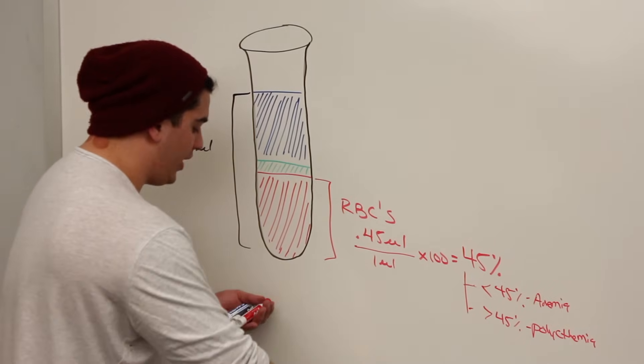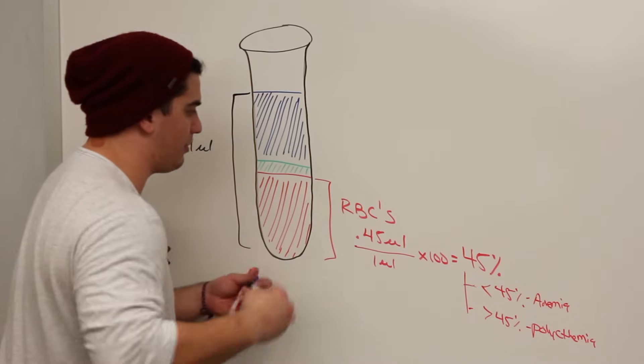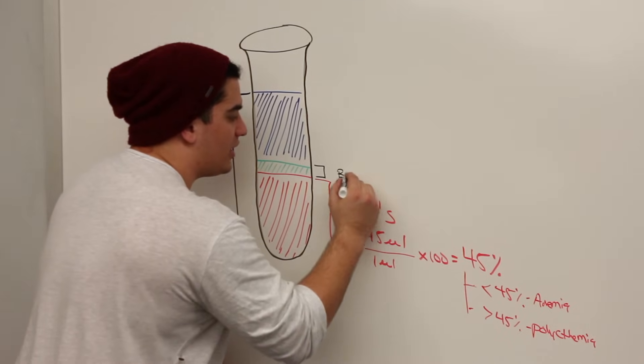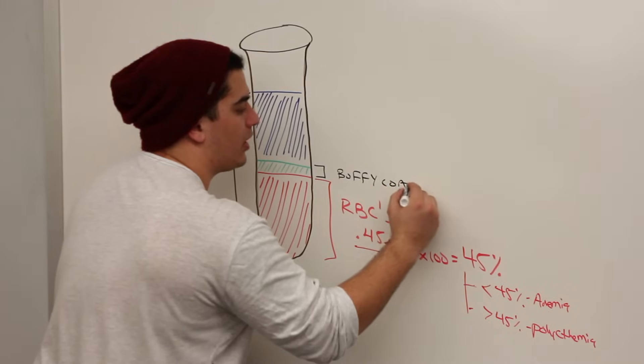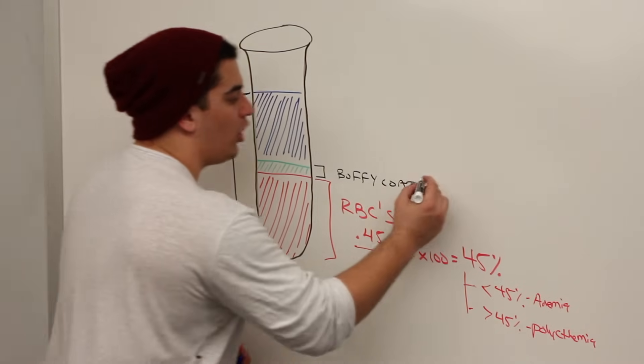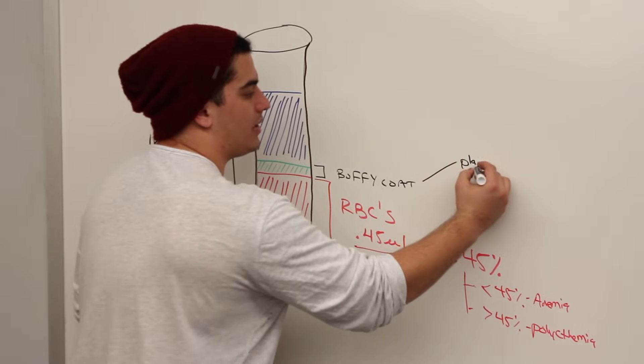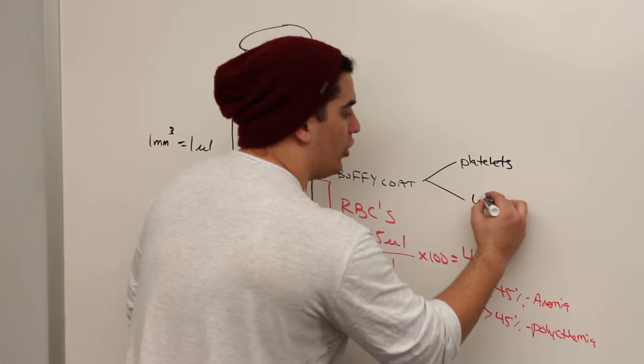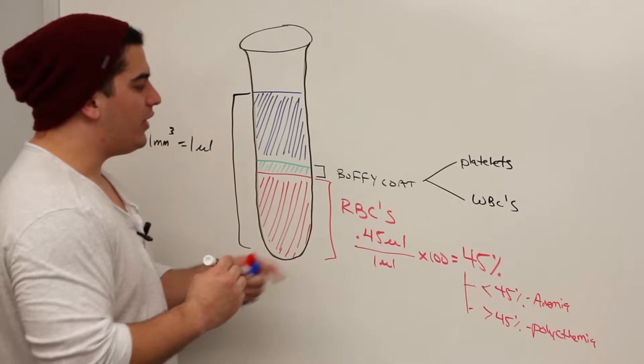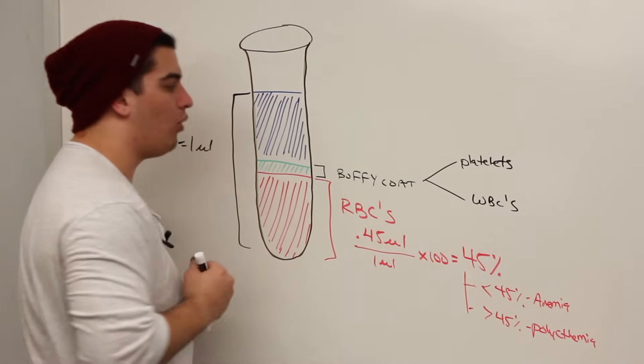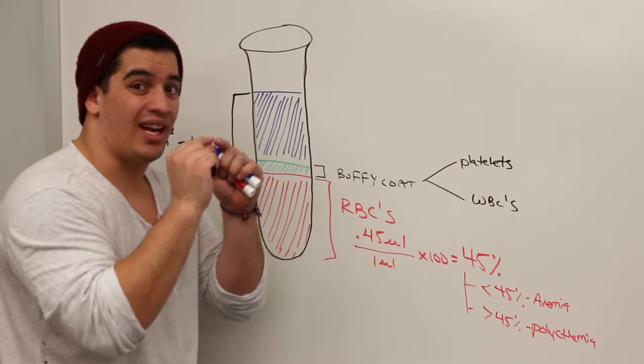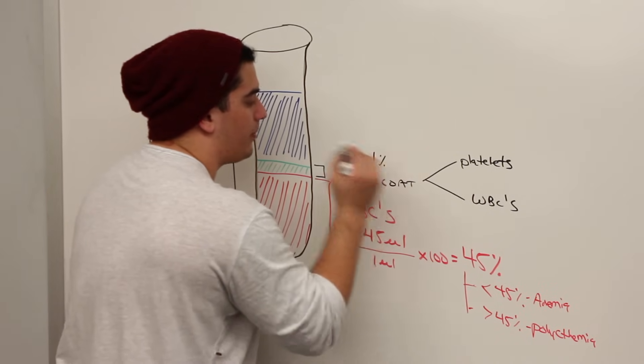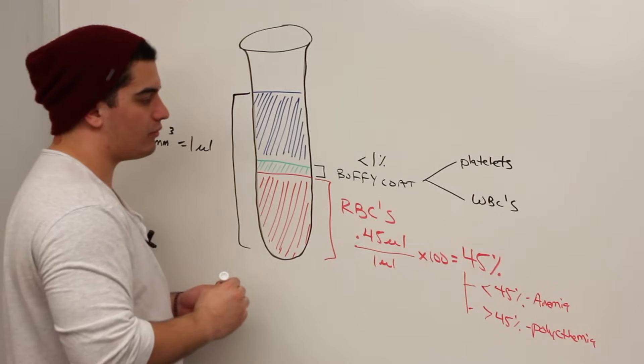What is this green little layer right here? This green layer is called the buffy coat. The buffy coat consists of two different types of formed elements. One of those formed elements is going to be platelets. The other formed elements is going to be white blood cells or your leukocytes. Now the buffy coat only accounts, if you take out of this fraction, out of the whole, it only accounts for about not even 1%, almost less than 1%.